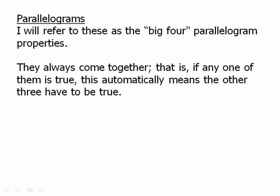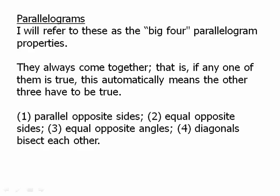Here's the interesting thing: the big four properties always come together as a package deal. If any one of them is true, it automatically means the other three have to be true. And if any one of them is not true, it automatically makes the other three not true. It is absolutely impossible to construct a quadrilateral that has some of the big four but not others — either a quadrilateral has all four of them or none of them. Any quadrilateral that has all four of these true is a parallelogram. The four properties are: parallel opposite sides, equal opposite sides, equal opposite angles, and diagonals bisect each other — any one of those automatically makes the other three true.